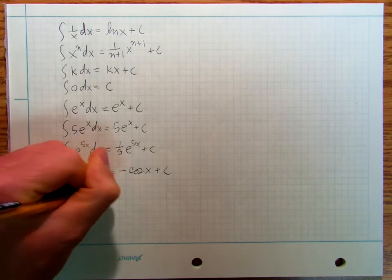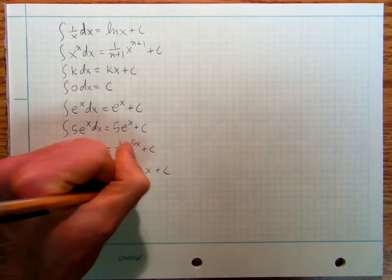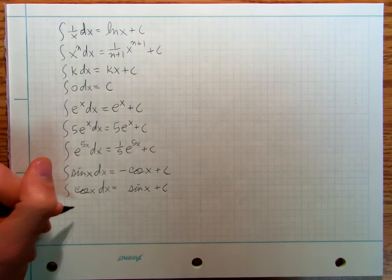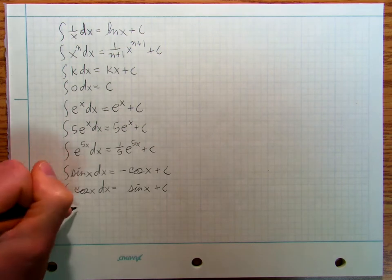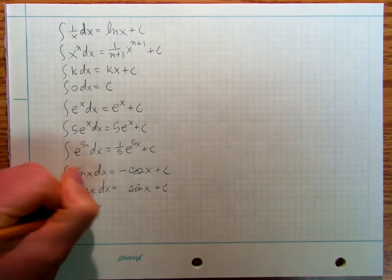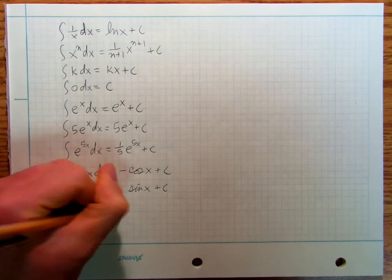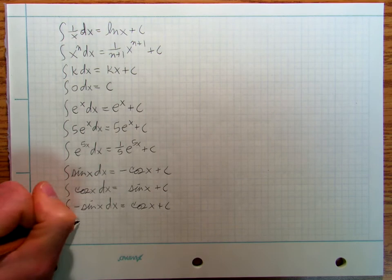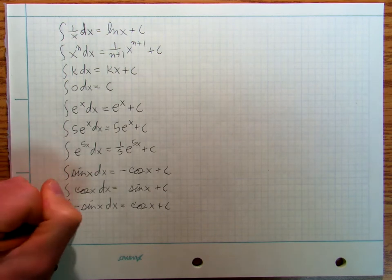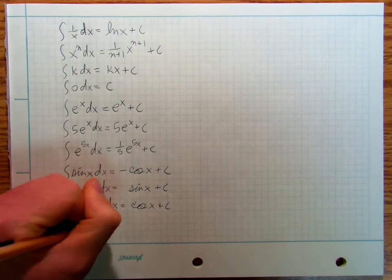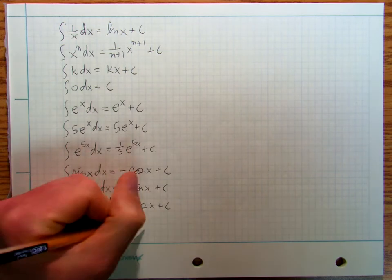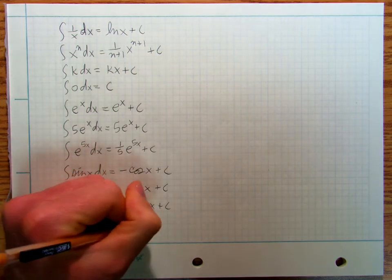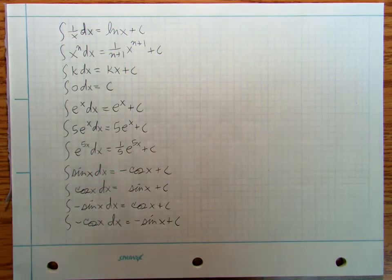Integral of cosine x dx is equal to sine x plus c. Integral of negative cosine x dx is equal to negative sine x plus c.